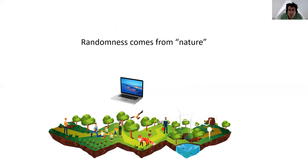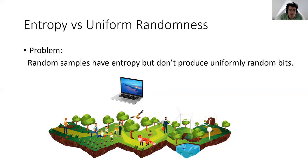To encompass all of these things, we can just imagine that randomness comes from various sources in nature — measurable properties of the environment in which the system is executing. Here's my abstract picture of nature, which generates randomness. The problem is that the randomness that nature generates is likely to have entropy — for example, the timing of interrupts is likely to have some entropy inside it — but it's unlikely to consist of uniformly random bits.